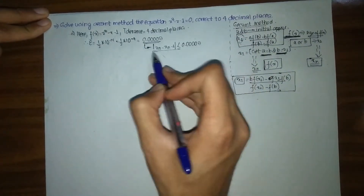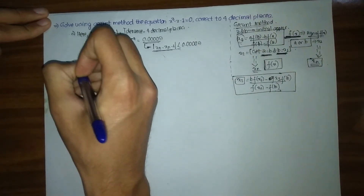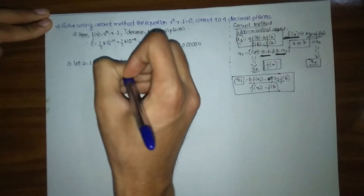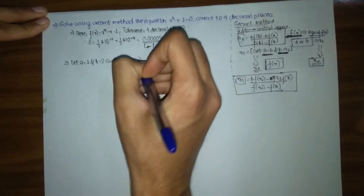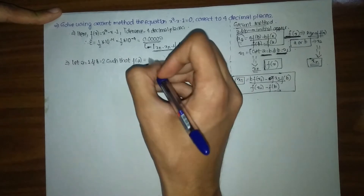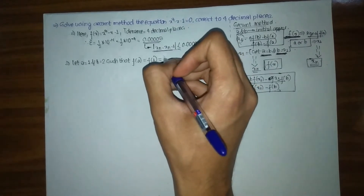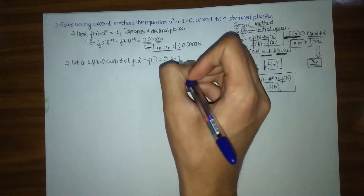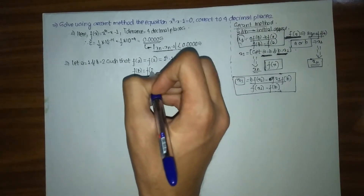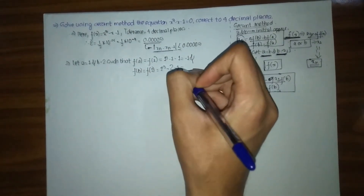We need to carry our steps until xn minus x(n-1) is less than or equal to 0.0005. For our initial approximations we let A equals to 1 and B equals to 2. So F(A) equals F(1): 1 cubed minus 1 minus 1 equals minus 1. And F(B) equals F(2): 2 cubed minus 2 minus 1 equals 5.